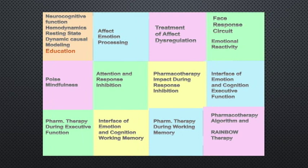I'm going to talk to you about twelve topics today. I'll cover: assessment, then emotion processing and treatment of affect regulation, then face response circuit, emotional reactivity, and how to treat with POISE and mindfulness, then attention and response inhibition and how to treat that domain with medication, then the interface of emotion and cognition with executive function task probe and how to treat with medication, then the interface using working memory and medication effects during working memory task, and finally the pharmacotherapy algorithm and RAINBOW — the overall treatment paradigm.